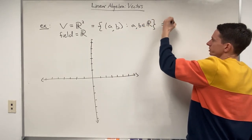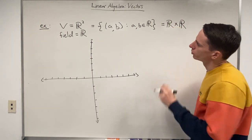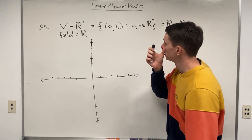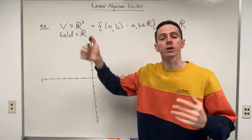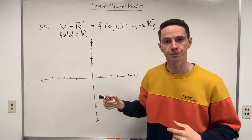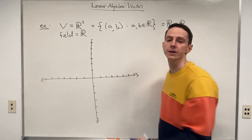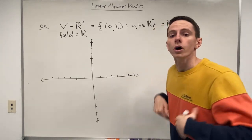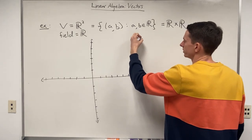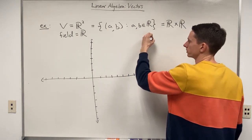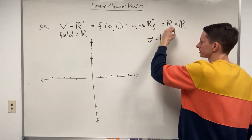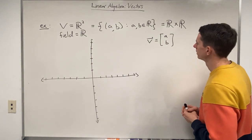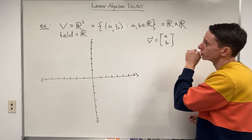R2 is simply the Cartesian product R cross R. If we want to represent a vector in R2, the way we do that is by writing the ordered pair as vertical brackets — a column vector — where the first component A is on top and the second component B is on the bottom. So a vector v in R2 is denoted with this column notation.